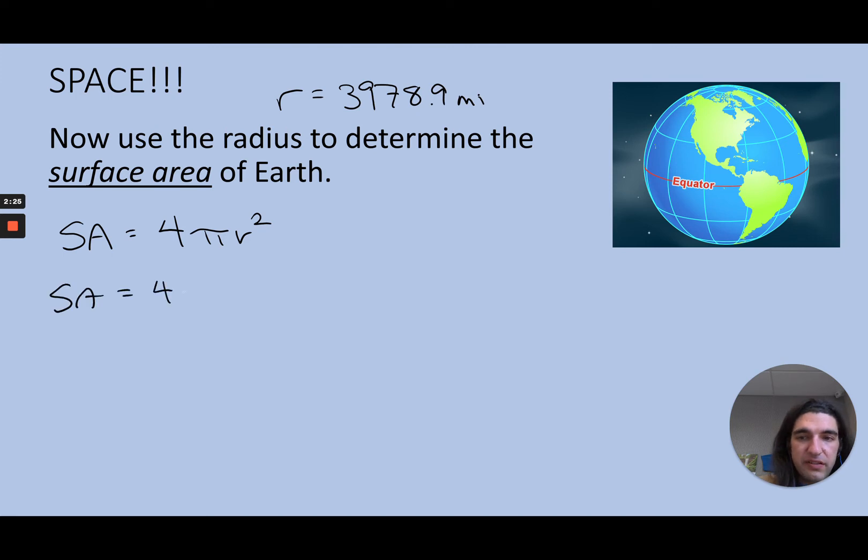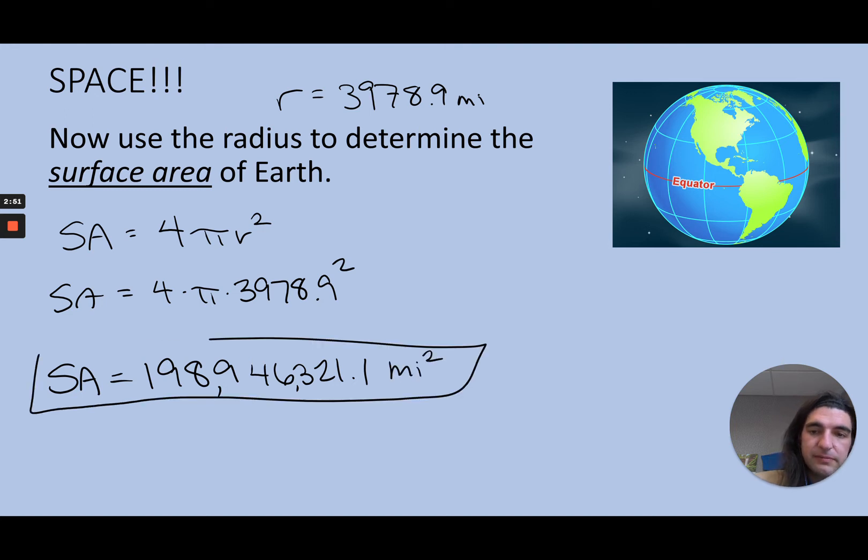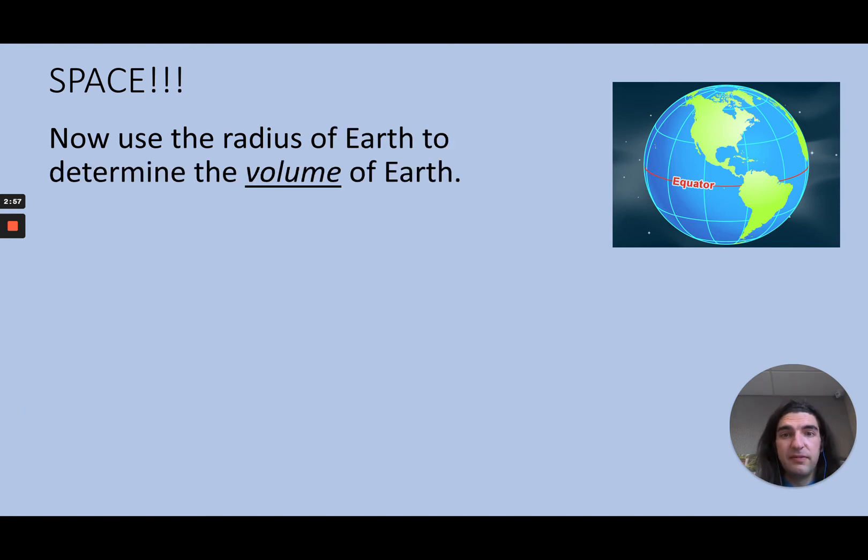And go 4 times π times 3978.9 squared, and the surface area of our planet is 198,946,321.1 square miles. So is that a lot? Yes. But is Earth large? Yes, also very large.